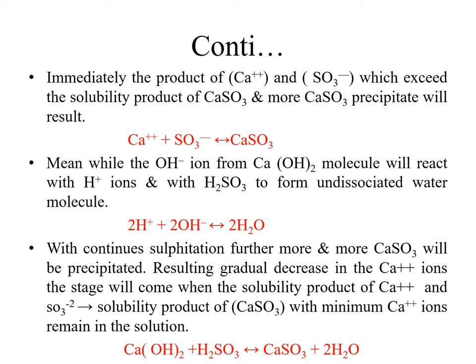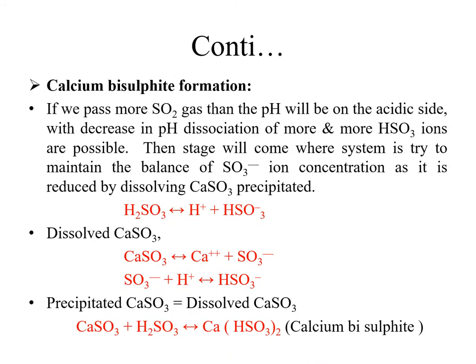The hydroxyl ions from calcium hydroxide react with hydrogen ions and with sulfurous acid to form undissociated water molecules. With continuous sulfitation, more and more calcium sulfite is precipitated. The resulting gradual decrease in calcium ions reaches a stage where the solubility product of calcium sulfite is reached with the minimum calcium ions remaining in solution. The second precipitation reaction is the formation of calcium bisulfite.